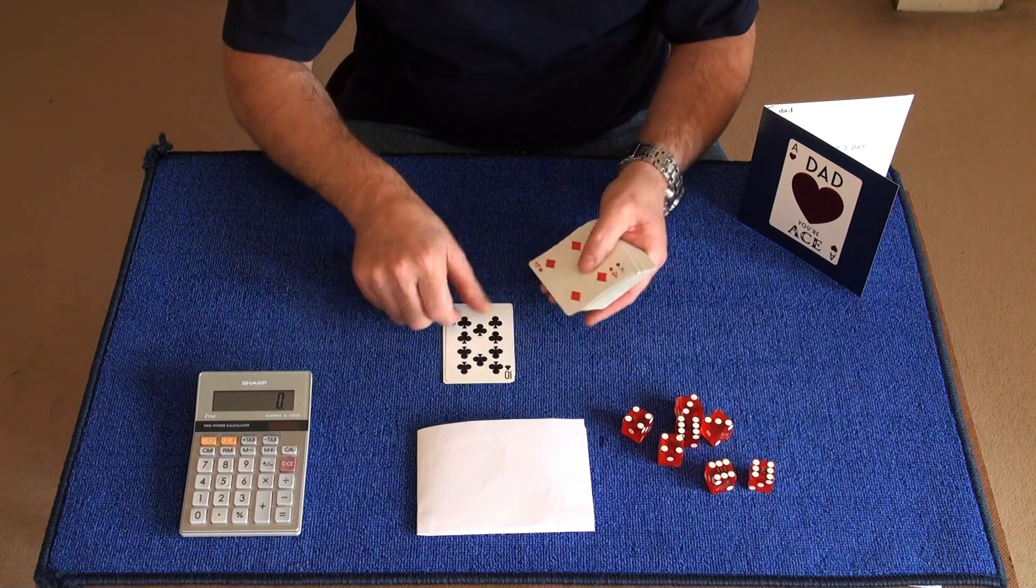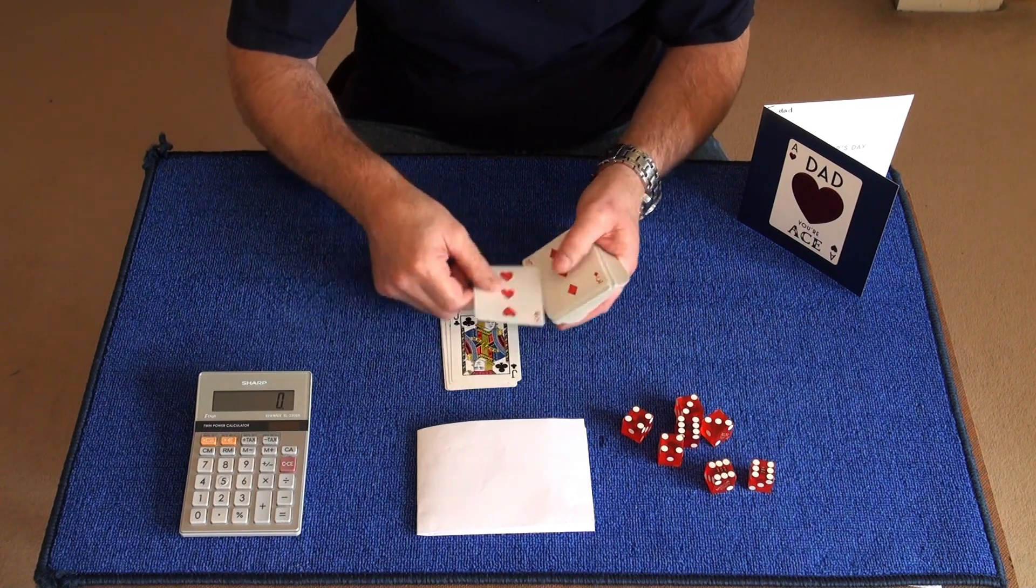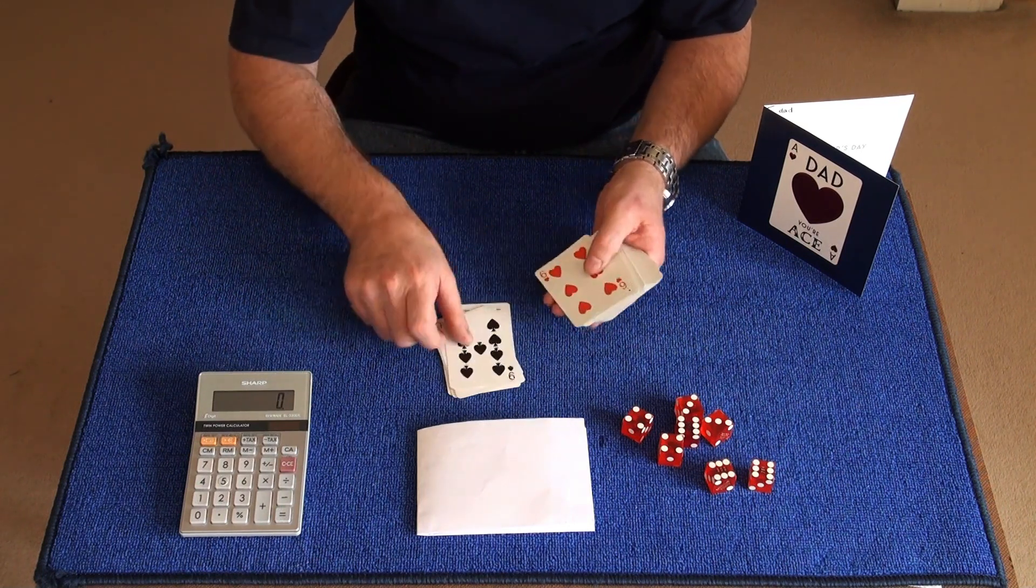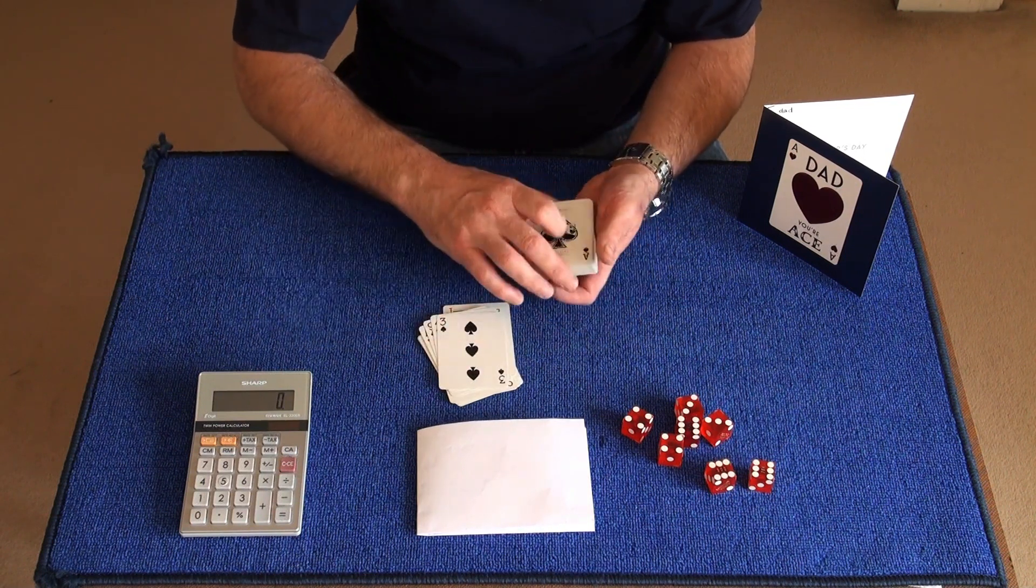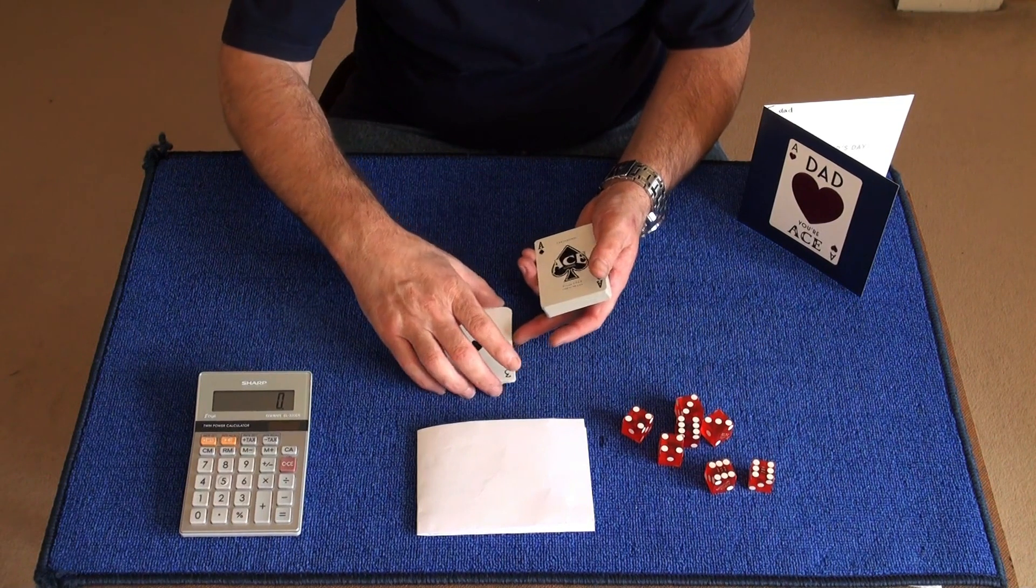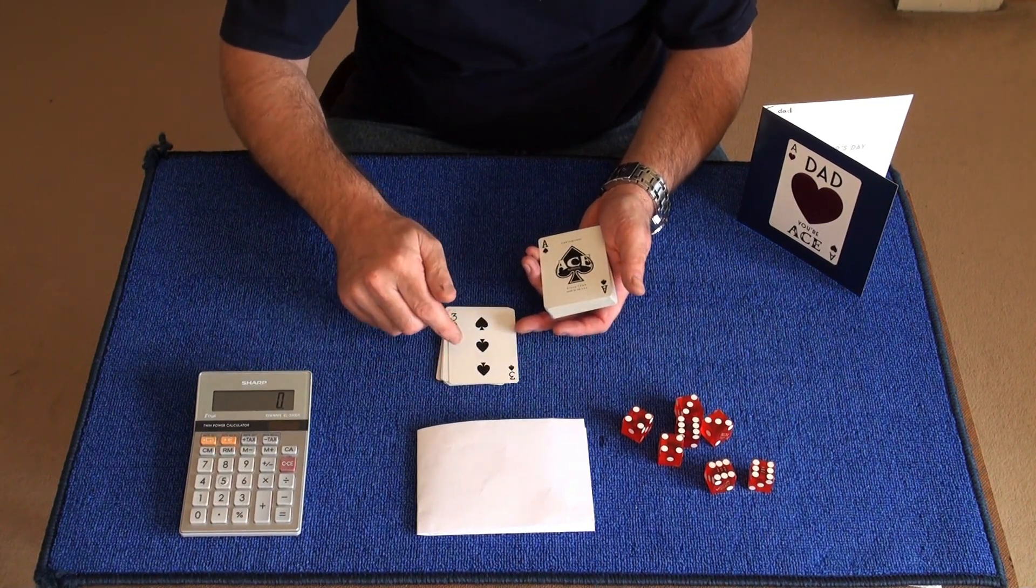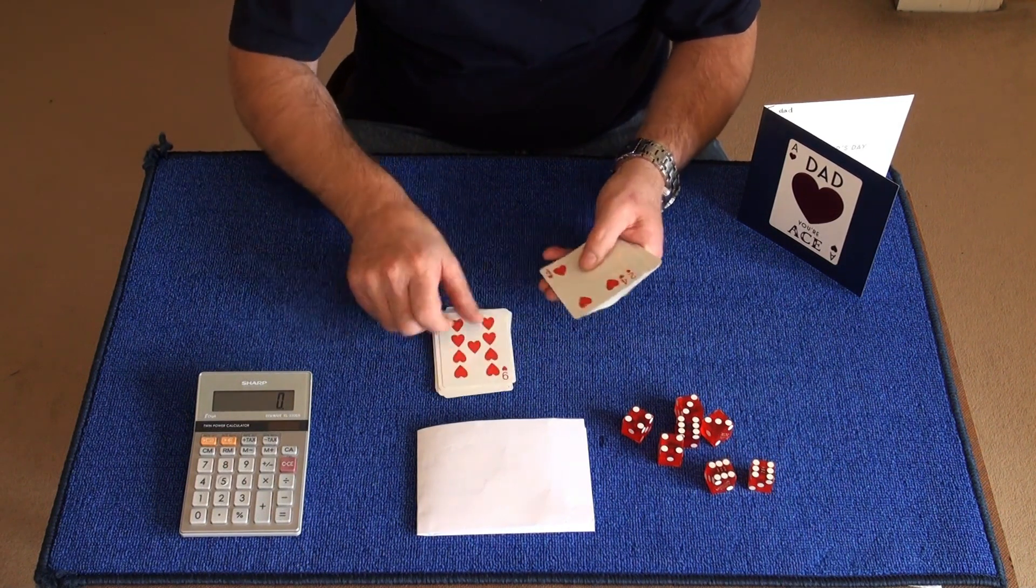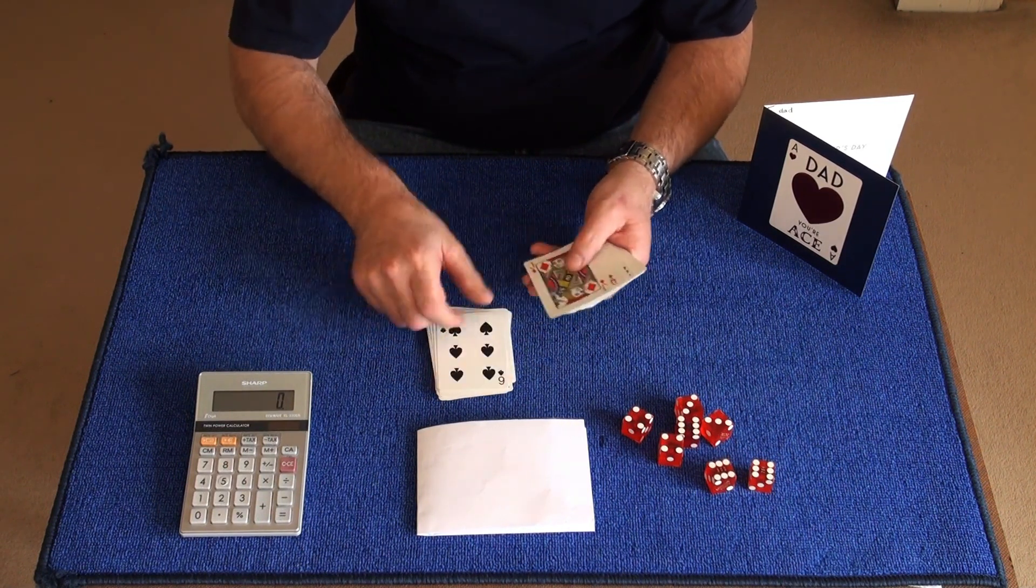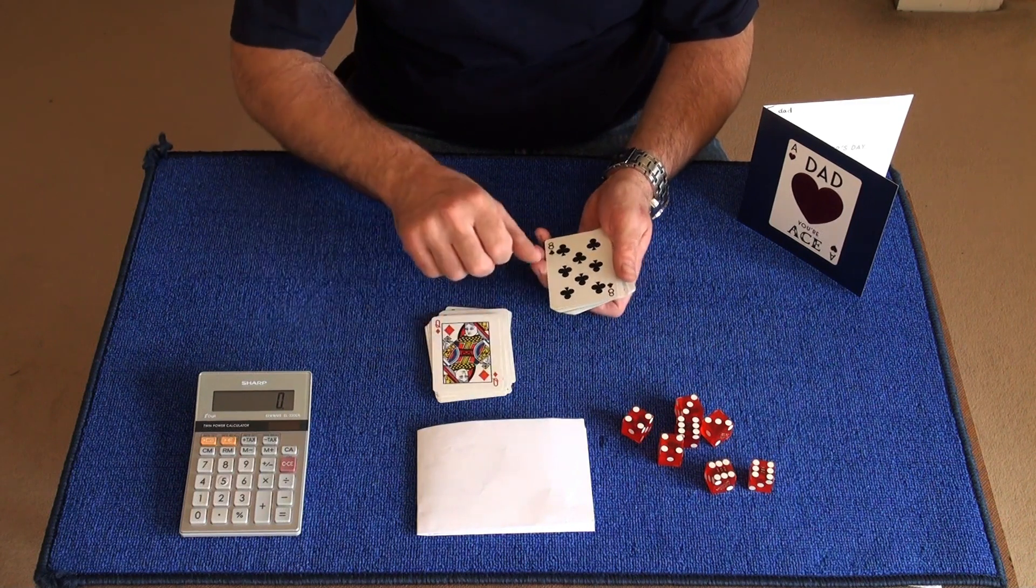Counting one through 15, then remember in the 15th position you want now the card. And you carry on counting 16 through 24.